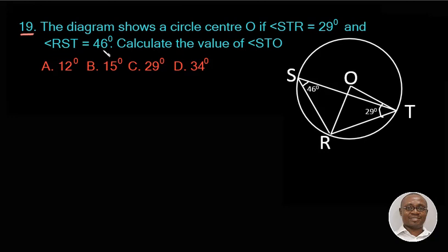We're talking about this diagram. If angle STR is equal to 29° and angle RST is equal to 46°, calculate the value of angle STO. We're talking about this tiny angle here. Let's say the angle is X. Let us quickly also identify some properties that we can find in this diagram.